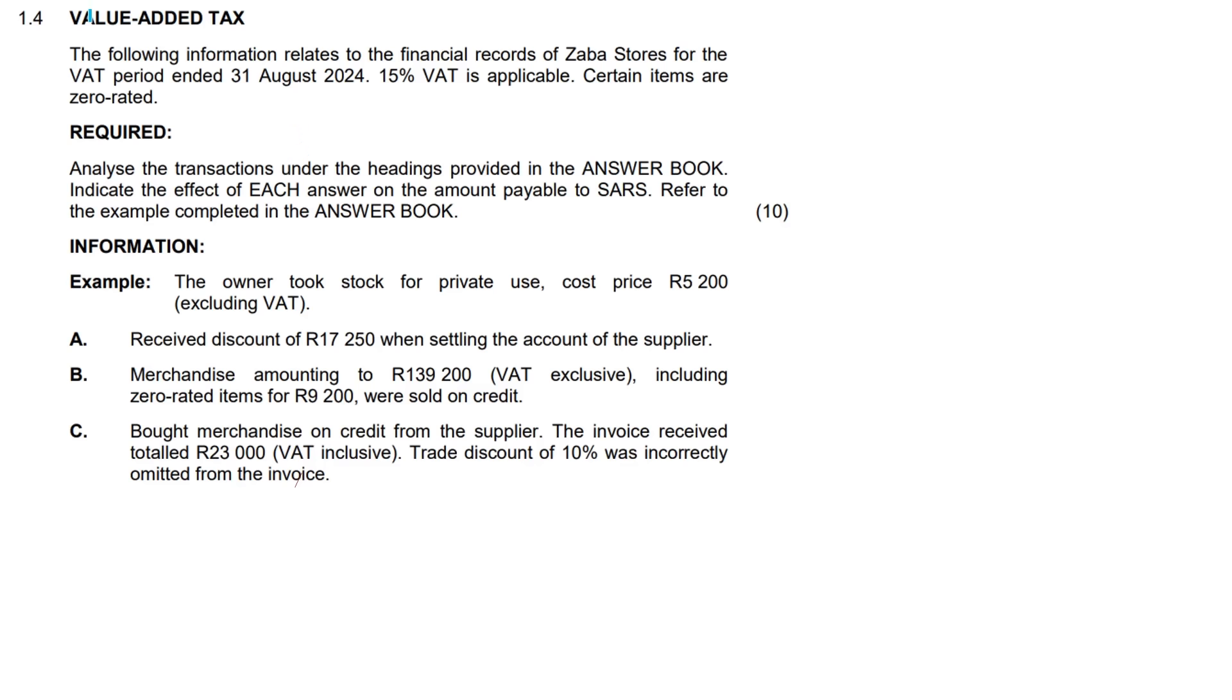How's it everybody? Let's take a good look at this VAT question. So we've got value added tax. I hope that's not too dark. The following information relates to the financial records of Zawa Stores for the VAT period ended 31 August 2024. Now 15% VAT is applicable and certain items are zero rated. Look, this is coming from the most recent matric final examination, in case you were wondering.